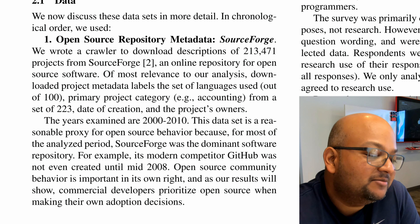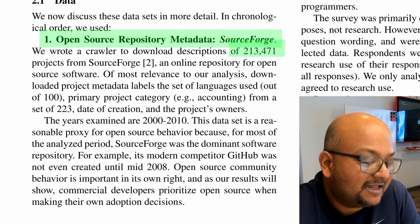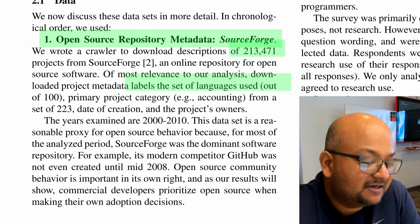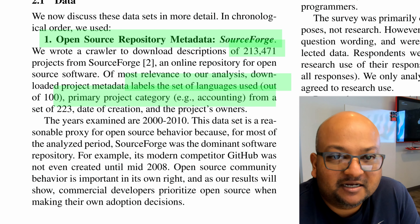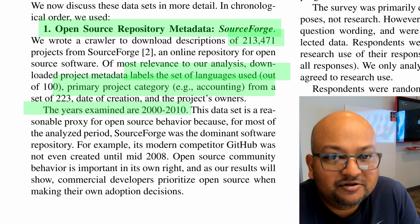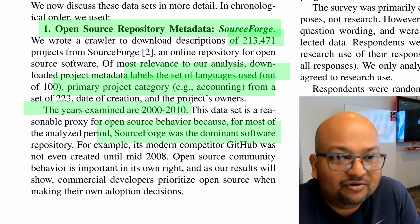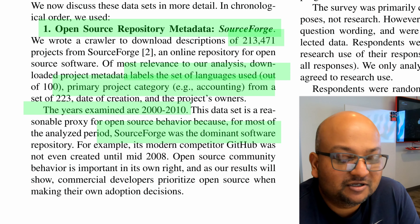Their primary data source is SourceForge. They pick more than 200,000 projects from SourceForge and look at things like what languages were used in the project and what domain or category the project was from. They look at the time period from 2000 to 2010.